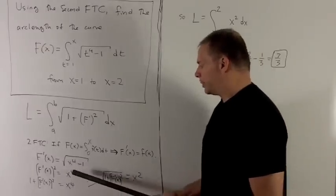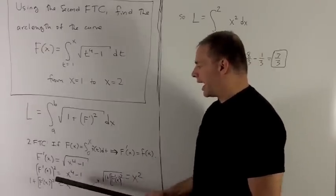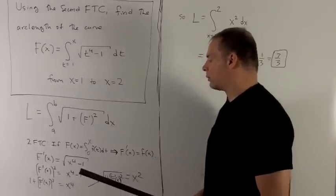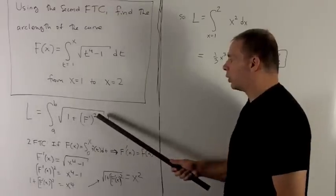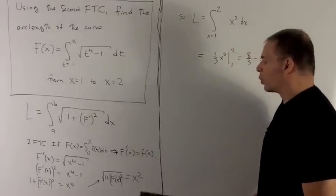I square that, gives me x to the 4th minus 1, and then I add 1, and that gives me x to the 4th. Square root gives me x squared.